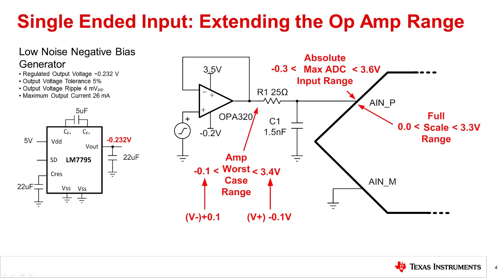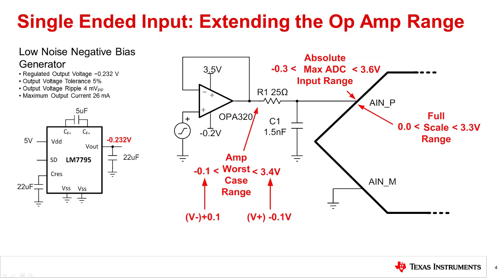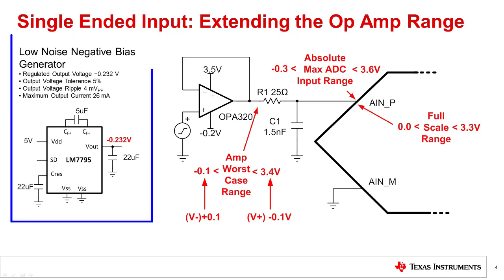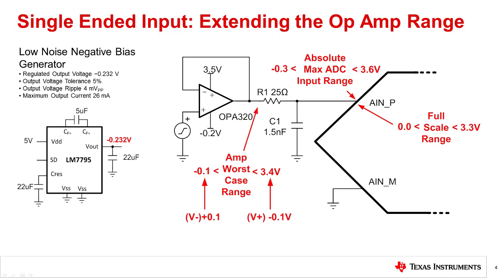In other words, each digital output code corresponds to a unique analog input voltage. It is important to also make sure that the amplifier does not exceed the data converter's absolute maximum range of negative 0.3 volts to 3.6 volts, and the amplifier's supplies cannot exceed this range. The limitation of this method is that unusual supplies are required, especially the negative 0.2 volt negative supply. One device worth noting is the LM7795, a charge pump specifically designed to generate a small negative supply. The main concern with this circuit is making sure that sufficient filtering is used to minimize switching noise.